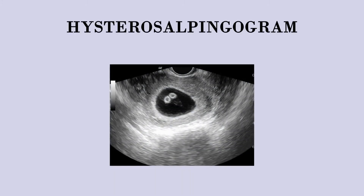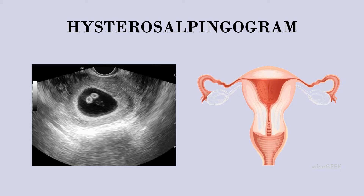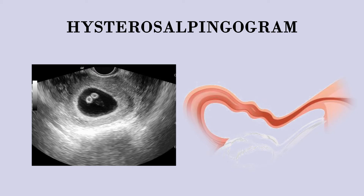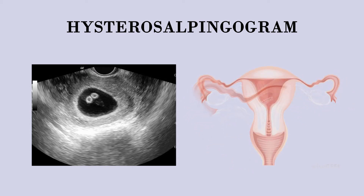The hysterosalpingogram checks the condition of the woman's fallopian tubes. The doctor clamps the cervix and injects a needle filled with dye into the woman's uterus. An x-ray is taken to determine whether the dye passes through the open ends of the fallopian tubes — if the dye emerges, the tubes are not blocked. The dye is harmless, absorbed by the body, and the test is rarely painful.